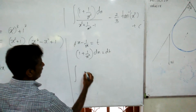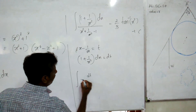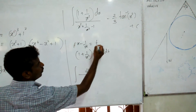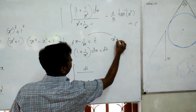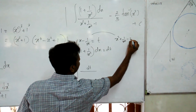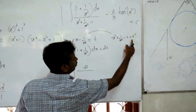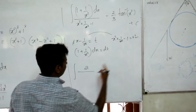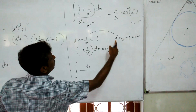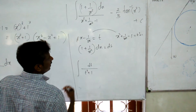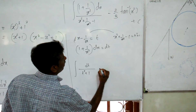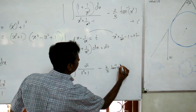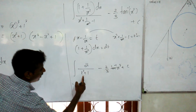Substituting dt, the denominator becomes x² + 1/x² minus 2 + t², and since x² + 1/x² - 2 = t², the denominator becomes t² + 1... wait, t squared minus 1, so this integral resolves. The second part gives minus 2/3 tan inverse(x³) plus c.